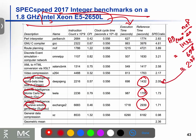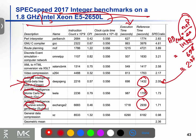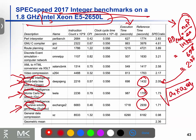For a single program benchmark, we calculate individual reference time divided by execution time for each program. Then we compute the geometric mean: multiply ratios a1 × a2 × a3 and take the cube root (n-th root for n programs).